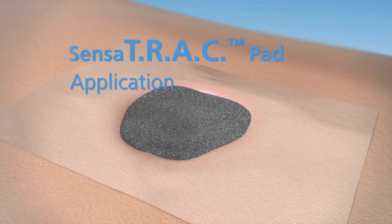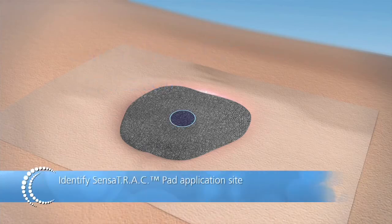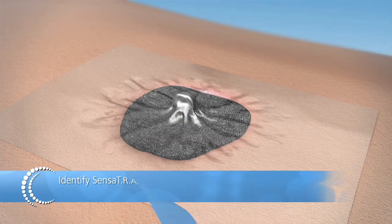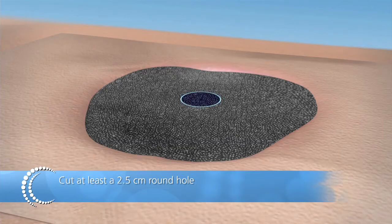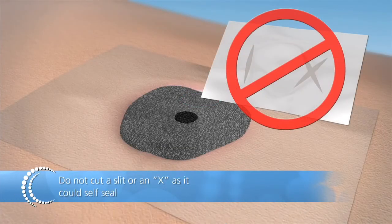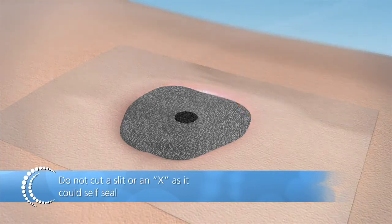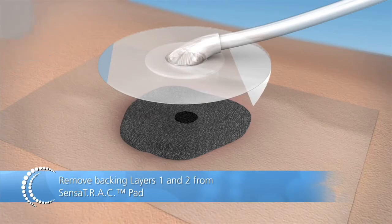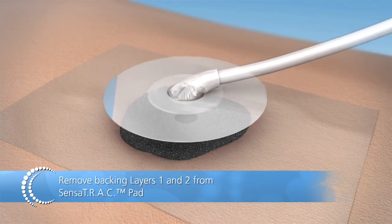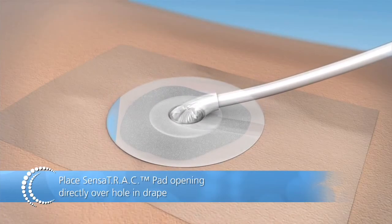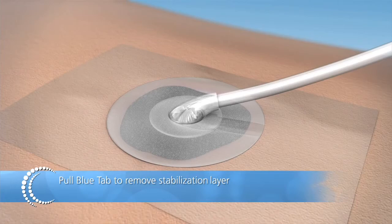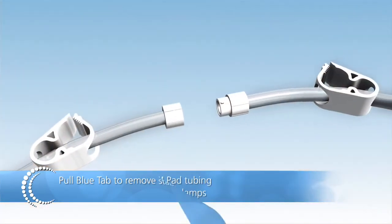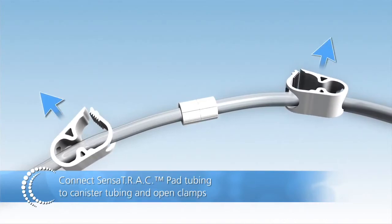Sensatrac pad application. Identify Sensatrac pad application site. Pinch drape and cut at least a 2.5 cm round hole. Do not cut a slit or an X as it could self-seal. Remove backing layers 1 and 2 from Sensatrac pad. Place Sensatrac pad opening directly over hole in drape. Apply gentle pressure to secure. Pull blue tab to remove stabilization layer. Connect Sensatrac pad tubing to canister tubing and open clamps.